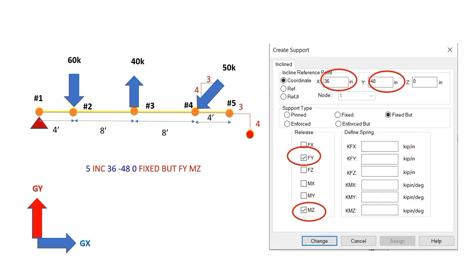The command line shows: node number five, 'Inc' indicating the inclined nature of the support, then 36, minus 48, and 0 defining the relative distance from node five to the reference point that establishes the inclined axis system. The support type is then defined as fixed but FYMZ with reference to the inclined axis system.